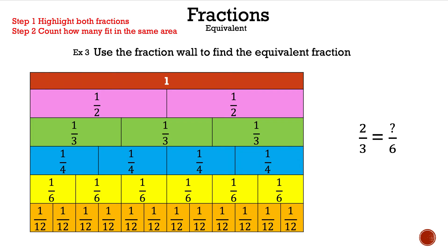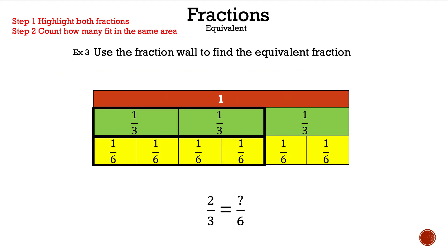Let's take a look at example three: use the fraction wall to find the equivalent fraction. We have two thirds equal to something over six. Let's highlight the thirds and the sixths and see how many sixths are in two thirds: one, two, three, and four. So two thirds is equal to four over six.